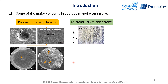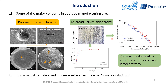On the other hand, steep thermal gradients and repeated heating and cooling cycles associated with additive manufacturing processes lead to the development of columnar grains which are generally aligned along the build direction. The presence of these columnar grains will lead to strong anisotropy in the mechanical properties when subjected to monotonic and cyclic loading, and sometimes also lead to large scatters in the mechanical properties. Therefore it is essential to understand the process-microstructure-performance relationship of any material built by additive manufacturing.